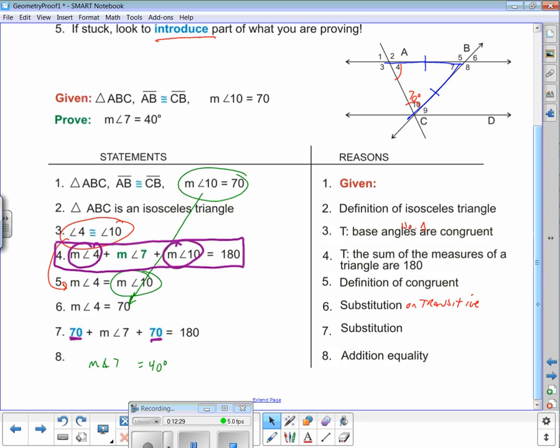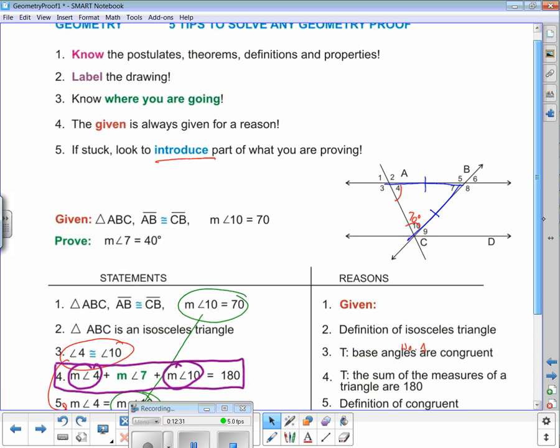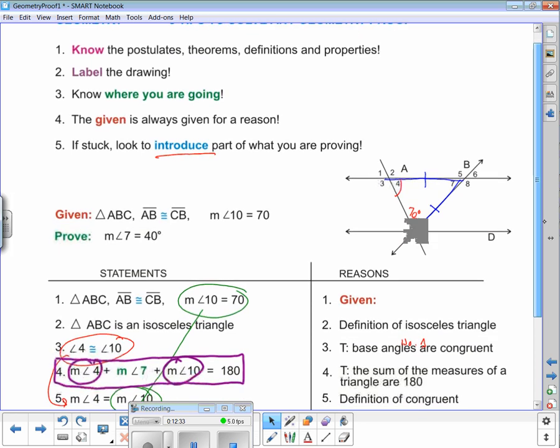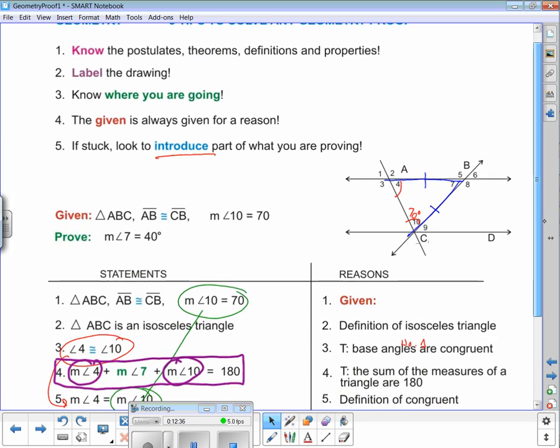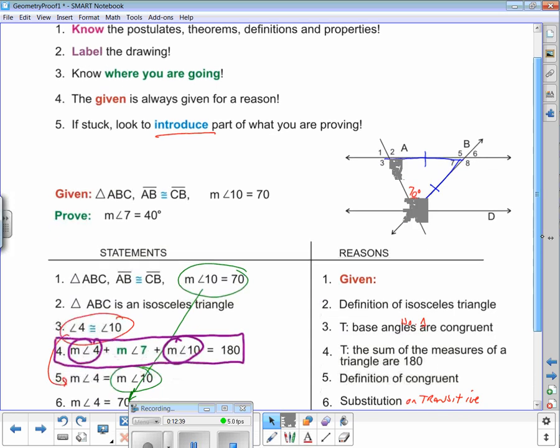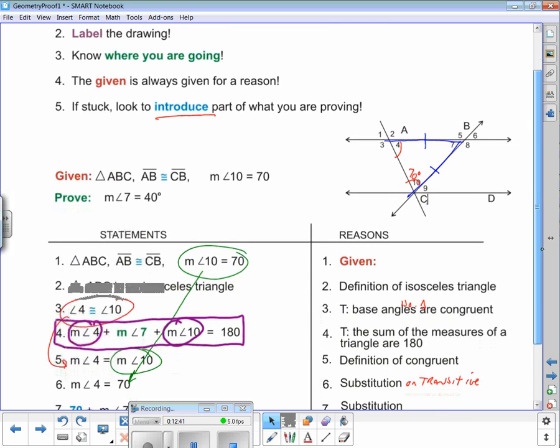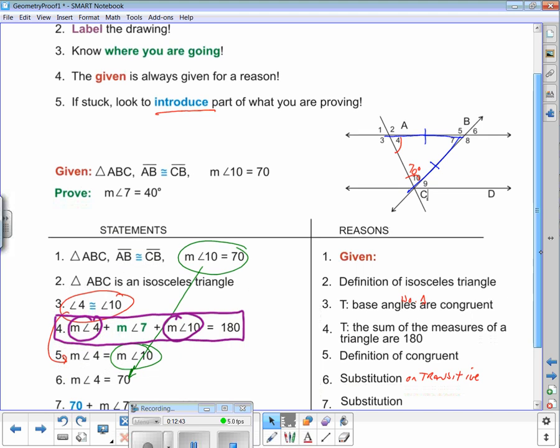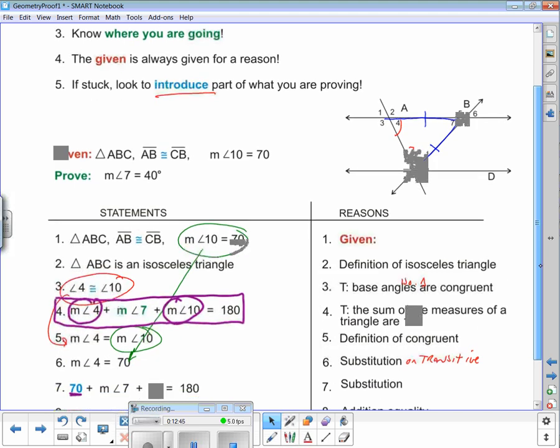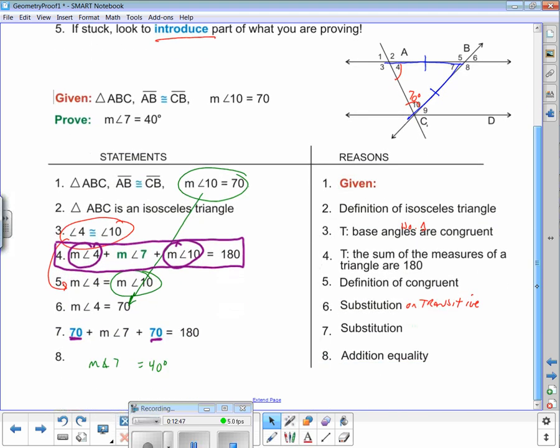We've used almost all of our tips. Tip 1: know the postulate, theorems, definitions, and properties - you've got to spend time reviewing them. Label the drawing. Know where you're going. The given is always given for a reason - it's going to get you a bunch of steps, sometimes all of them. And 5: if stuck, look to introduce part of what you are proving. It'll help you get there. That's it. Hope you enjoyed.